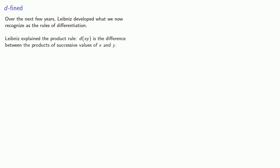Leibniz explained the product rule. d(xy) is the difference between the products of successive values of x and y.